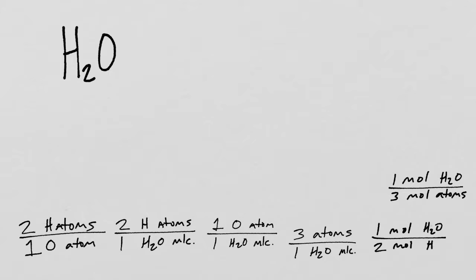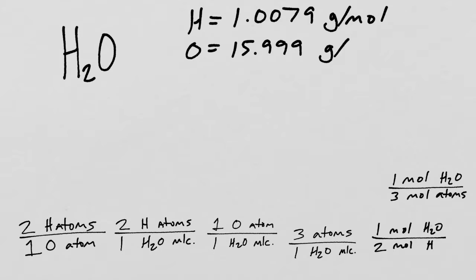We can talk about masses. We know that one hydrogen atom is approximately 1.0079 grams per mole, and we know that oxygen is about 15.999 grams per mole. So what can we say now with grams?